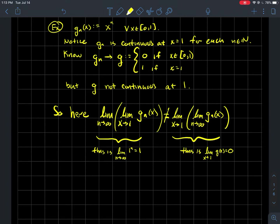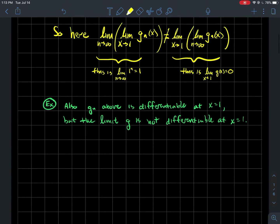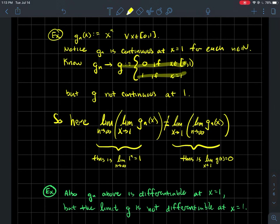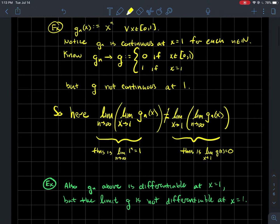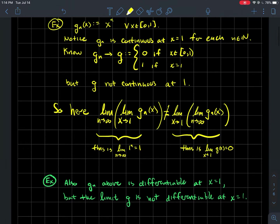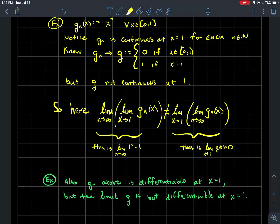Let's look at another example using the same g_n and g. Each g_n — that is, x to the n — has derivative n times x to the n minus one, so each g_n is differentiable. But this piecewise limit function is not continuous at one, so it's not differentiable there either. The same problem applies when property P is differentiability: even if every function in the sequence is differentiable, you cannot necessarily expect that the limit function will be differentiable as well.